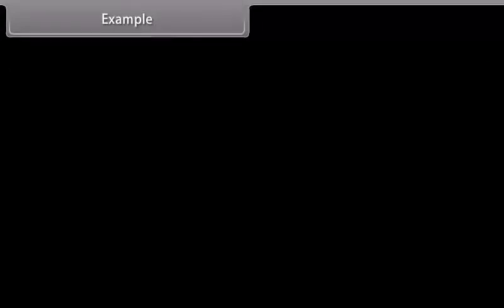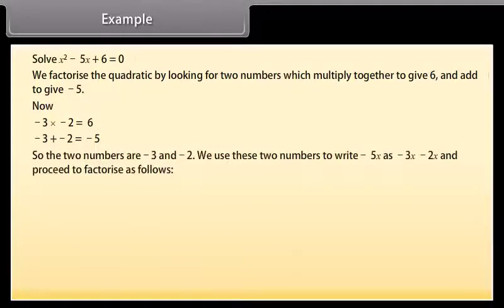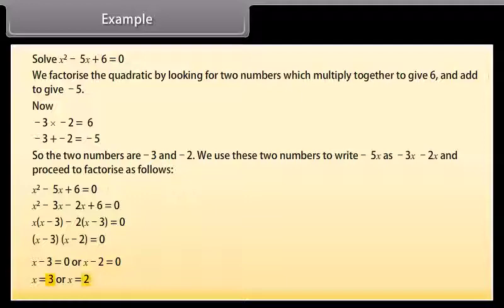Suppose we wish to solve x² − 5x + 6 = 0. We factorize by looking for two numbers which multiply to give 6 and add to give −5. Now −3 × −2 = 6 and −3 + (−2) = −5, so the two numbers are −3 and −2. We write −5x as −3x − 2x and factorize, giving x − 3 = 0 or x − 2 = 0, so x = 3 or x = 2.